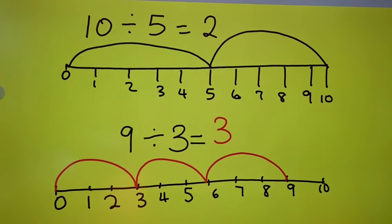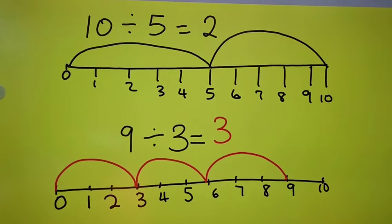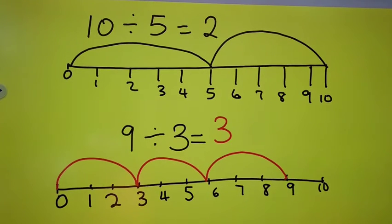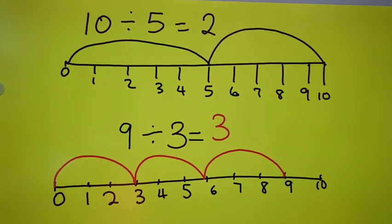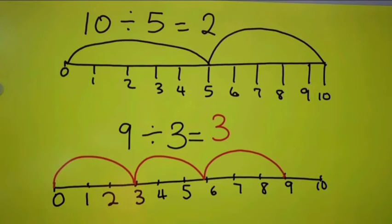Next up, here I used the number line. 10 divided by 5 equals 2. So I had the kids draw a number line and number it from 0 to 10. We're going to be counting backwards, so starting from 10, 10 take away 5, we make one jump and stop on the 5, then 5 take away 5, we make another jump.